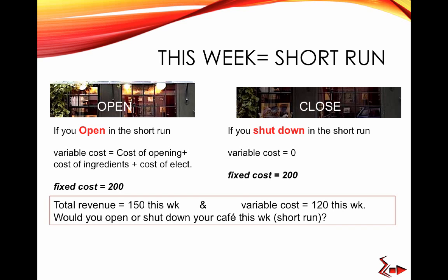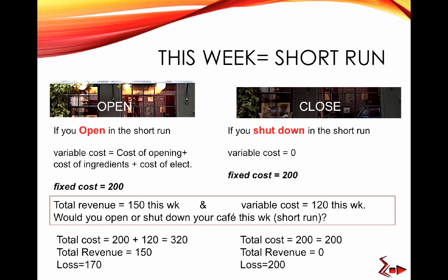Would you open or shut down your cafe this week? If you kept it open, your total cost is $200 fixed plus $120 variable, so $320. Your total revenue is $150. So your loss is $170. What if you shut down in the short run? Your total cost is just the fixed cost of $200, and you make no revenue, so your loss is $200. Your loss is smaller if you open your cafe than if you kept it closed.